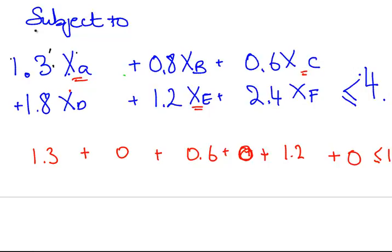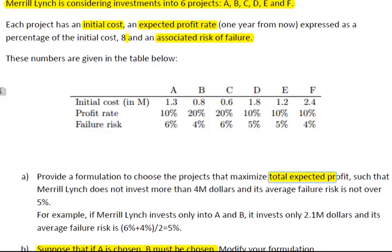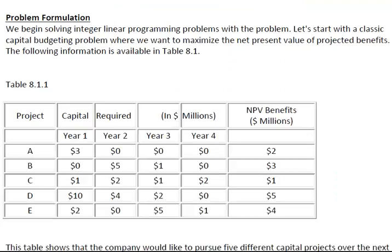That's all well and good. So this is the profit rate. From the profit rate we got the profit. This is the cost. Now this next bit is actually probably a little bit of a challenge. The average total failure risk, the average failure risk is not over 5%. The failure risks are equally weighted. They're not weighted by cost or anything like that.